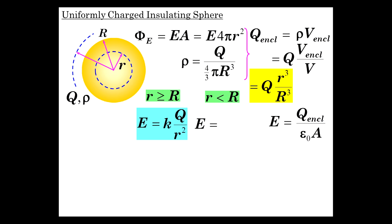For R less than R, it doesn't encompass all the charge. It encompasses Q r cubed over R cubed. So there is Q enclosed, Q r cubed over R cubed is all embedded here.